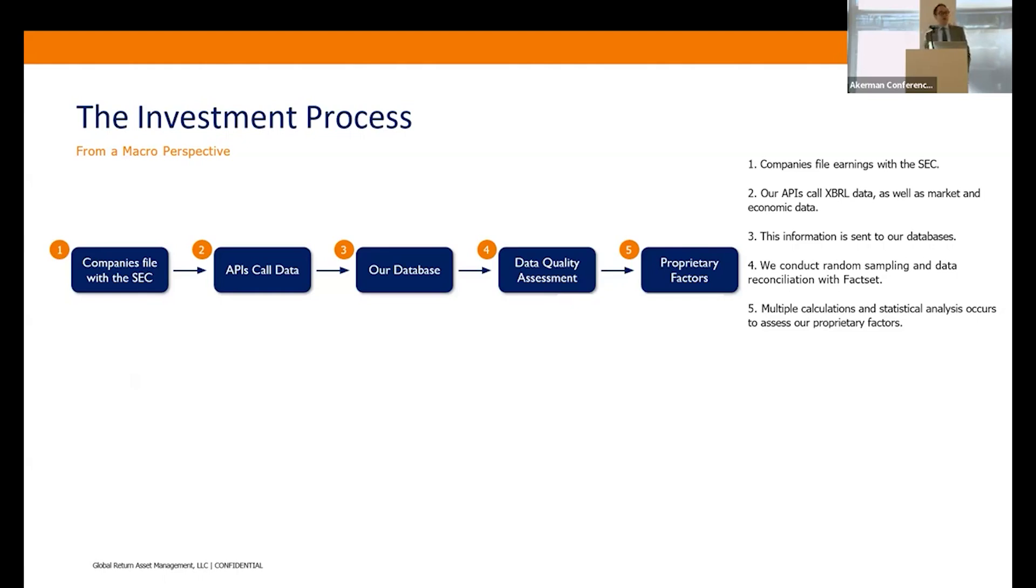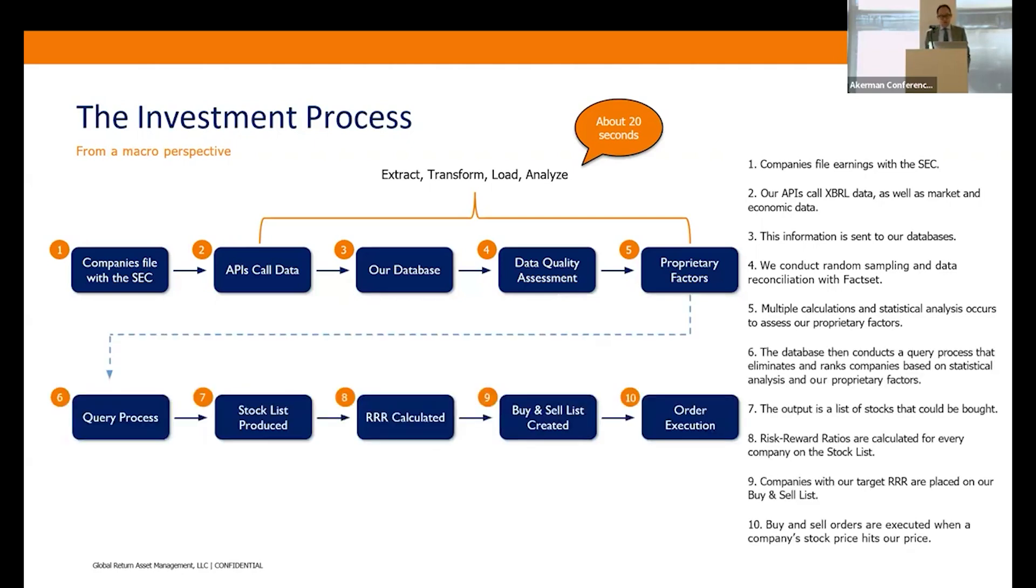That's for all the Russell 3000. Like I said before, it would take me about two weeks to thoroughly analyze one company before. This extract, transform, load, analyze now takes about 20 seconds for the entire Russell 3000. That's powerful. The value to investors is that before I could only look at one company—now I can look at 3,300 companies in 20 seconds, which enables me to find more opportunity and uncover alpha.